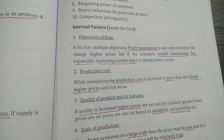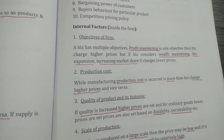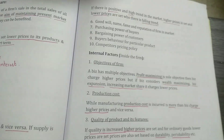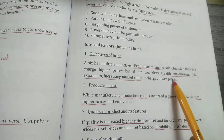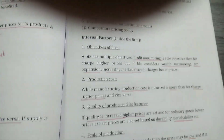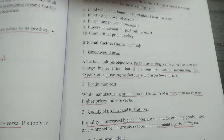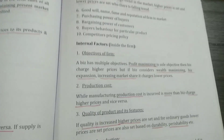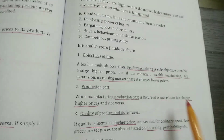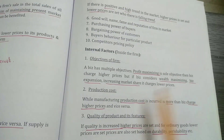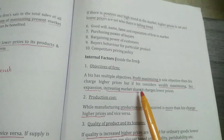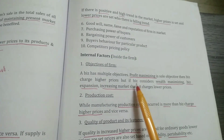The very first internal factor is the objective of the firm. If the firm's main objective is to make profit, then obviously it wants to increase its wealth — that is, wealth maximization — and also business expansion and increasing the market size. These three are the objectives, and for profit maximization the price fixed by the company will be quite high.